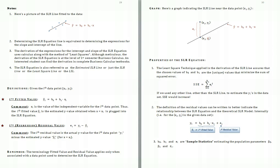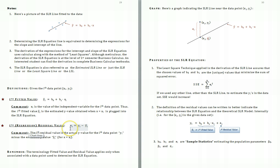Now we'll make a couple of important definitions. For the ith data point in our data set, the ith fitted value is defined as y-hat_i equals B0 plus B1 times x_i — that is, we've plugged the x value of the ith data point into the Simple Linear Regression line. The ith regression residual value e_i equals y_i minus y-hat_i, which is the y value of the ith data point minus the ith fitted value.